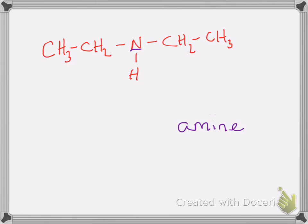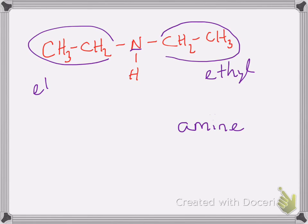The next thing you do is find the biggest group hanging on that nitrogen. I have an ethyl group here on the right that I'm circling. Underneath the nitrogen is just a hydrogen, and on the left-hand side of the nitrogen, that is also an ethyl group. The biggest group is an ethyl group and there are two of them, so the nomenclature is diethyl — it is a diethylamine molecule.